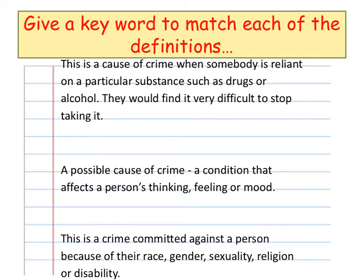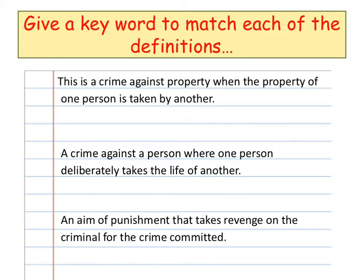Number ten: this is a crime committed against a person because of their race, gender, sexuality, religion or a disability. Number eleven: this is a crime against property when the property of one person is taken by another. Number twelve: a crime against a person where one person deliberately takes the life of another.